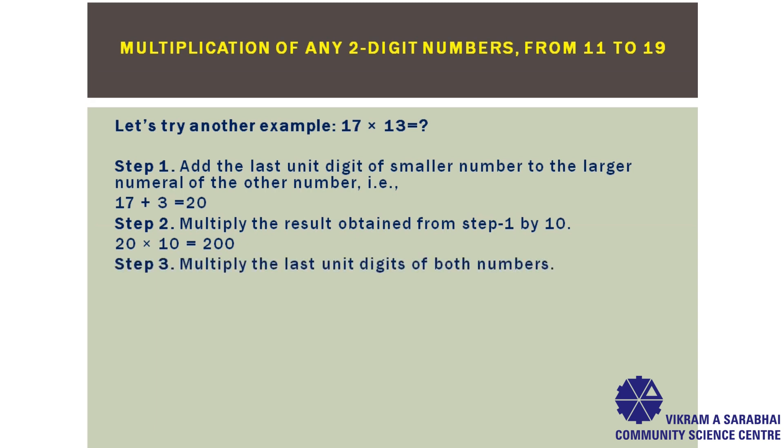Then, multiply the last unit digits of both numbers, that is, 7 from 17 and 3 from 13. That is, 7 multiplied by 3 will get 21.